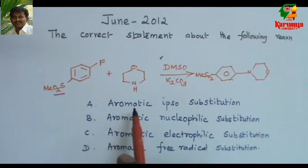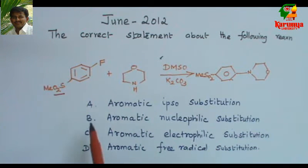Statement A, aromatic ipso substitution. This reaction involves aromatic ipso substitution. B, it is aromatic nucleophilic substitution. C, it is aromatic electrophilic substitution. D, it is aromatic free radical substitution.